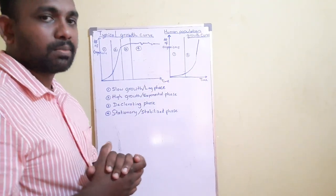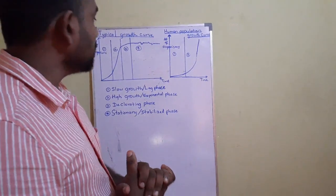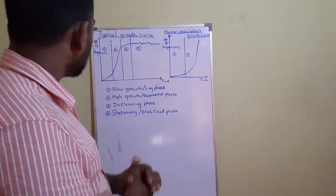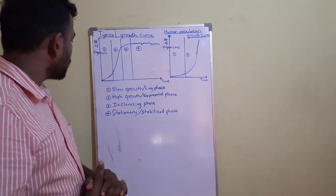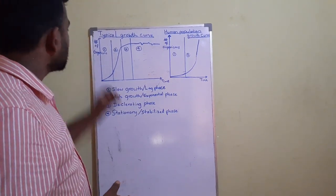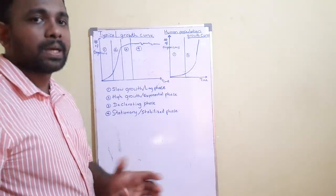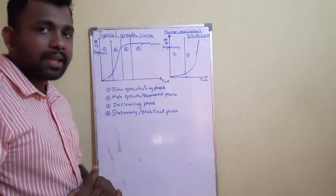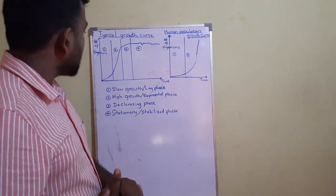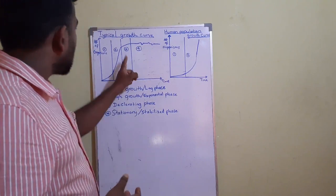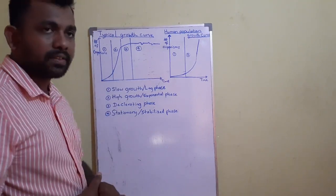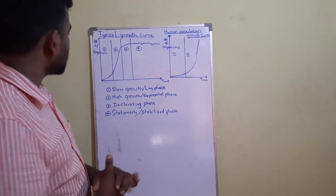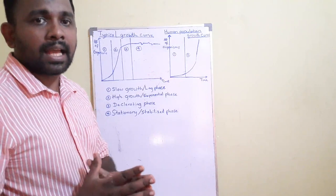Today we are going to discuss the growth curves of the population. The typical growth curve consists of four phases: the first phase is the slow growth phase, also called the lag phase; the second phase is the high growth phase, also called the exponential phase; the third phase is the decelerating phase; and the fourth phase is the stationary phase.